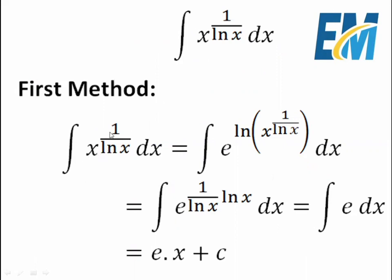First of all, x to the power 1 over ln x can be written as e to the power ln of the term, which is e to the power ln of x to the power 1 over ln x. We put the power of x next to ln to have e to the power 1 over ln x, all multiplied by ln x. So this integral becomes the integral of e to the power (1 over ln x · ln x). We can cancel out ln x and ln x to get the integral of e dx. e is a constant, so this integral is e multiplied by x plus c.